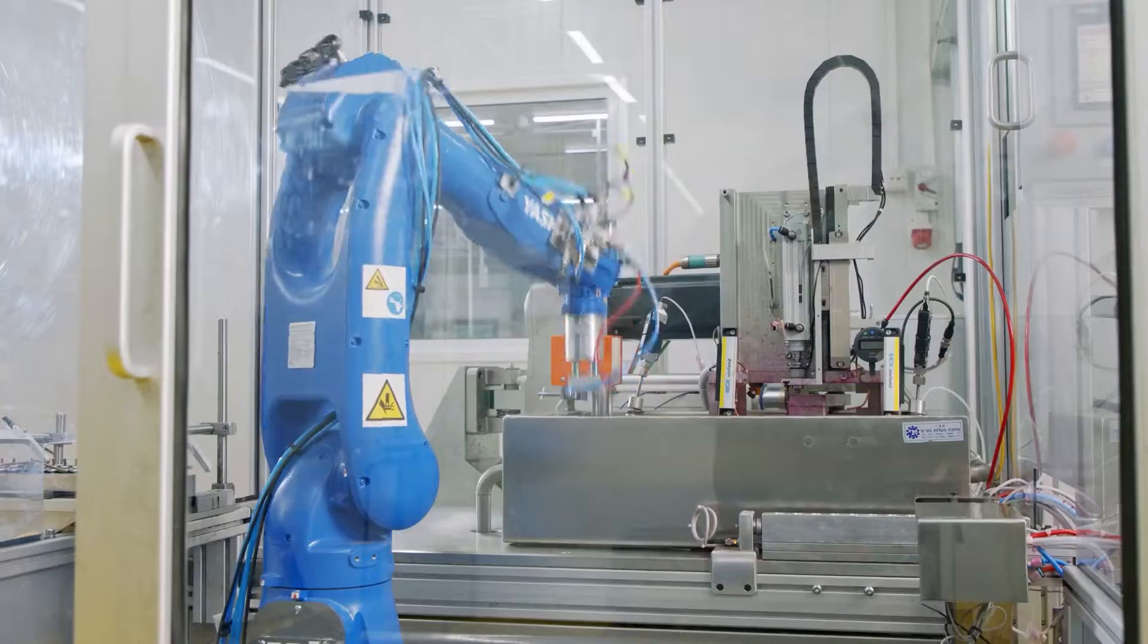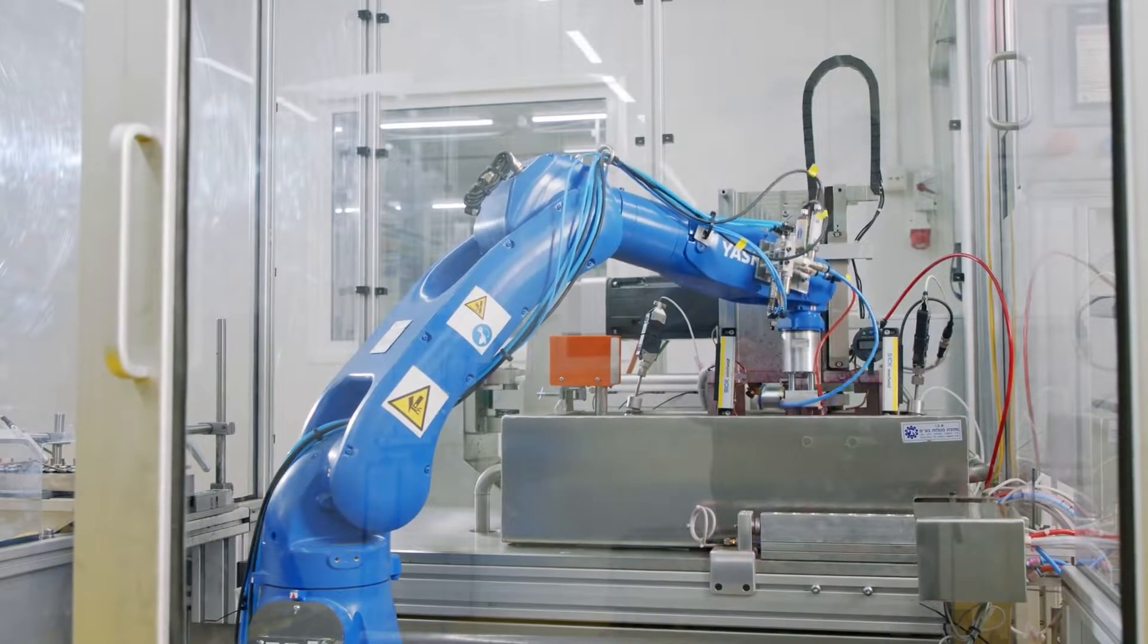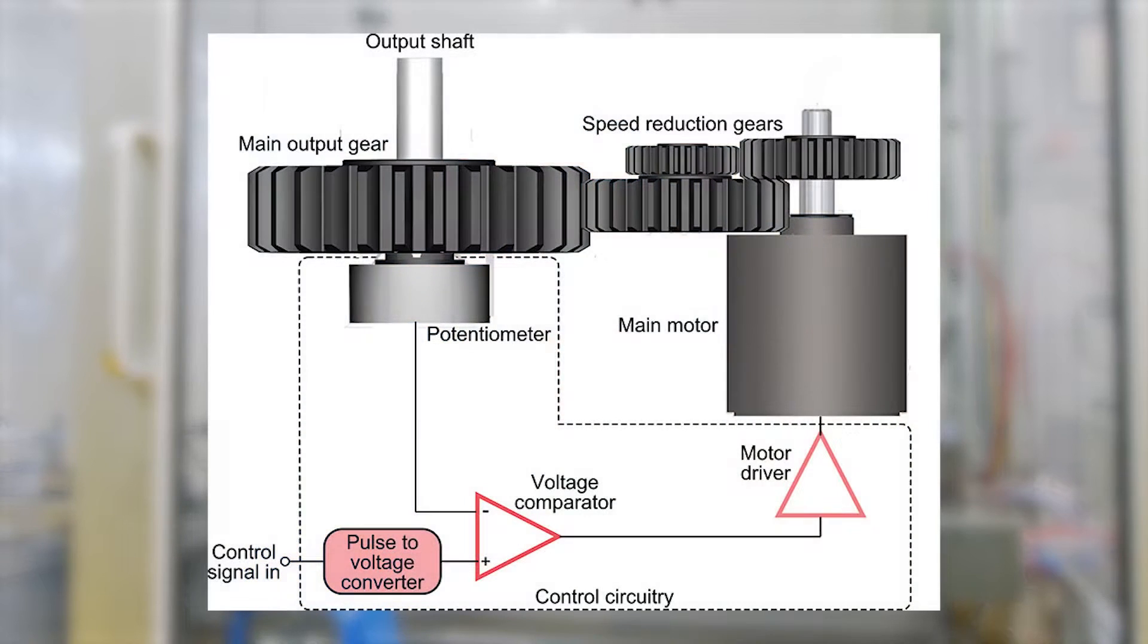But how does this servo motor achieve this precise movement? Like I mentioned earlier, it has a control circuit which mainly consists of an error detection amplifier and a position detector. For detecting the position, usually a potentiometer is used. The error detection amplifier is basically a comparator which will compare the input signal as well as the output from the potentiometer.